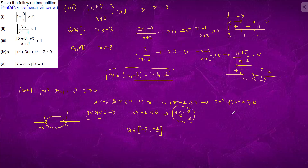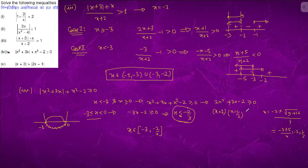For 2x²+3x-2 ≥ 0, using the quadratic formula x = (-b ± √(b²-4ac)) / 2a, we get roots -3 ± 5 over 4, giving x = -2 and x = 1/2. So the inequality is (x+2)(x-1/2) ≥ 0, giving x ≤ -2 or x ≥ 1/2.